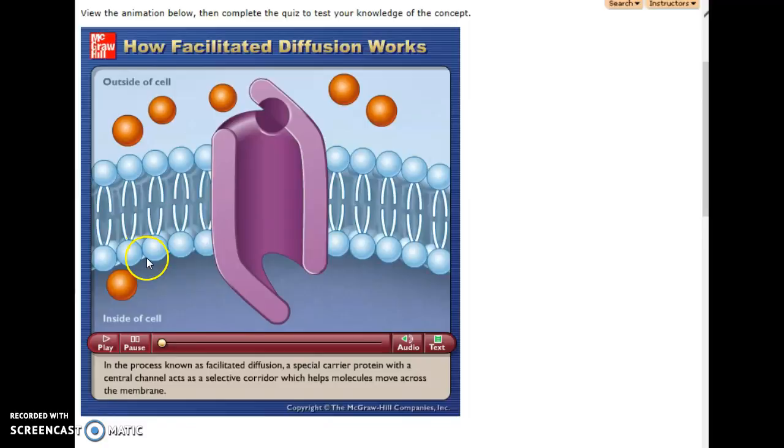Simple diffusion is when molecules can go directly through between these phosphate groups and the fatty acid tails. But some molecules that are too large or have polarity to a charge can't squeeze in between these portions of the phospholipid. So they need help, and that's where the term facilitated comes from. They need help across the membrane.